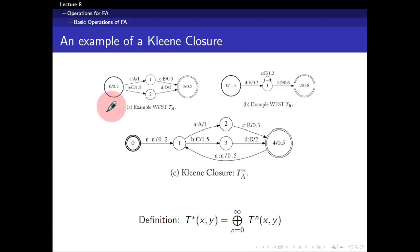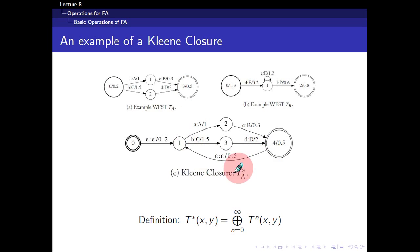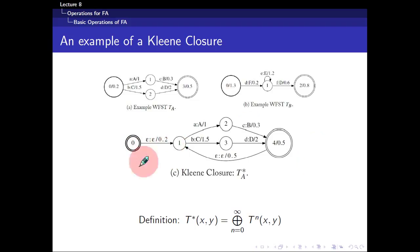Here's an example of the Kleene closure. Suppose you are given a transducer TA. A Kleene-closed transducer of TA looks like this: the final state is looped back to the initial state. Every time you reach the final state, you incur a cost — and moving away from it should also incur the same cost. That's why there's an epsilon transition here with a weight of 0.5. Because this is now the initial state, you don't want to incur this 0.2 weight again, so it's removed and put into the epsilon transition.